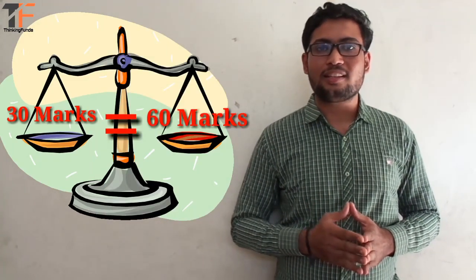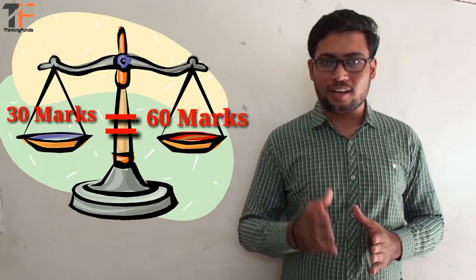For example, if you scored 16 marks in the subject having 3 credits and you scored 30 marks in the subject having 6 credits, the weight will be equal.